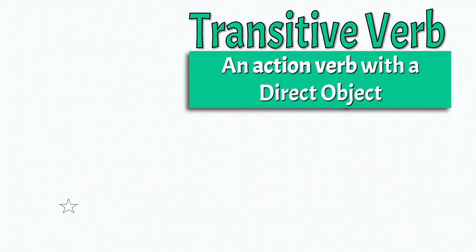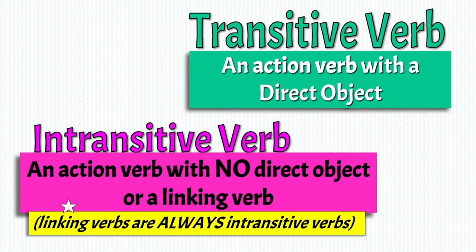Another important fact about English grammar is that we have transitive and intransitive verbs. A transitive verb is an action verb with a direct object — just like saw, to see, which is an action verb and a transitive verb, because they take objects. An intransitive verb, instead, is an action verb with no direct object, or a linking verb. Linking verbs are always intransitive verbs. We'll have a lesson on this point of grammar.